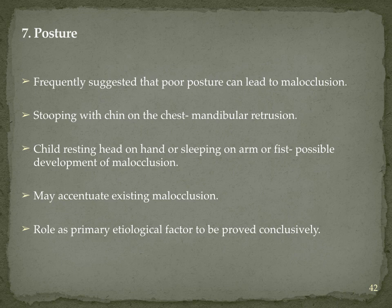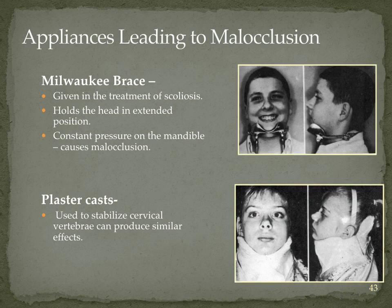Posture is also a factor: a stooping posture with the chin on the chest, maintained for more than six hours, creates continuous pressure altering bone growth — related to the functional matrix theory. For example, the Milwaukee brace used for scoliosis holds the head in an extended position, and this constant pressure on the mandible has adverse effects on mandibular growth. Similarly, plaster casts used to stabilize cervical vertebrae can produce similar effects when given during the growing age.